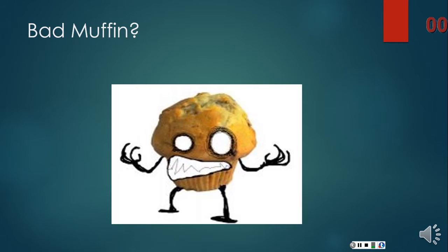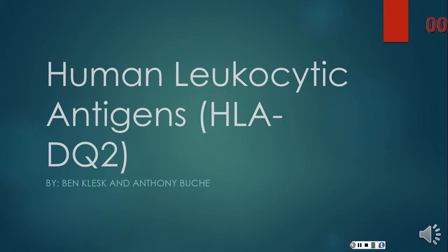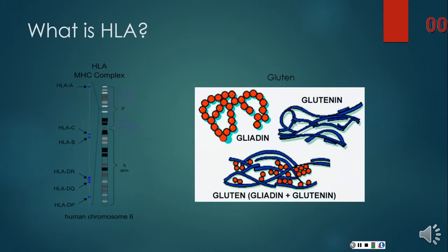Today I'm going to be talking about HLA, or human leukocytic antigens. The specific HLA I'll be talking about is DQ2, which causes celiac disease, or gluten intolerance. But to first understand this, one must understand what a human leukocytic antigen really is.